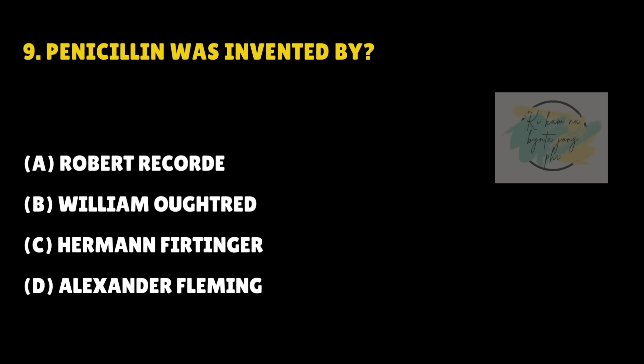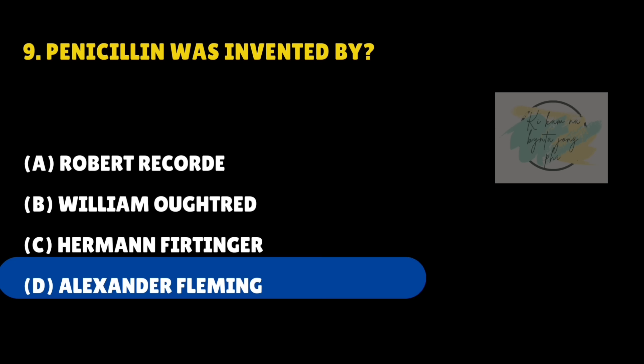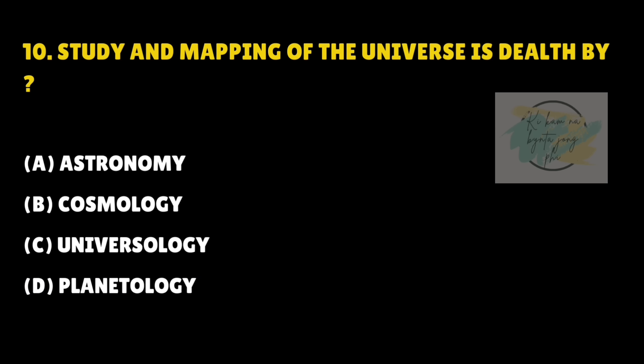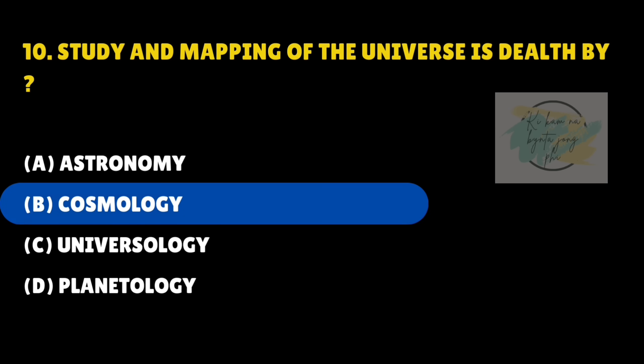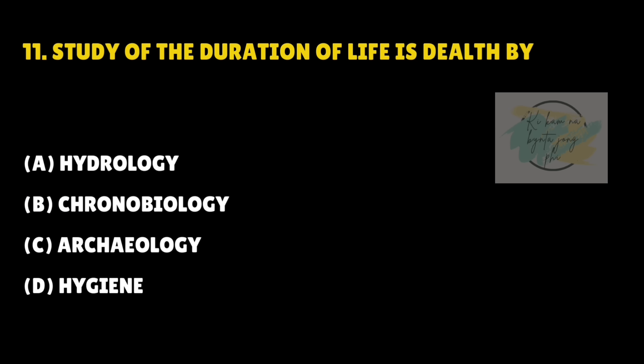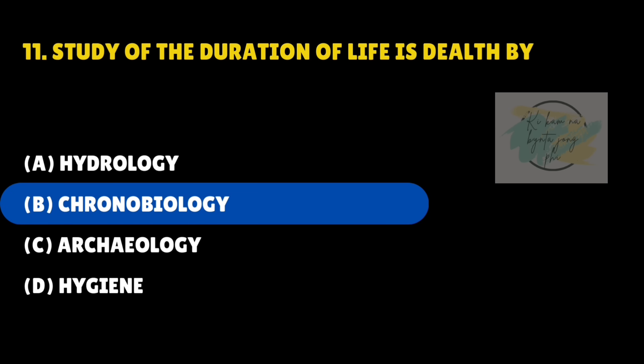Penicillin was invented by — answer is D — Alexander Fleming. Study and mapping of the universe is dealt by — answer is B — Cosmology. Study of the duration of life is dealt by — answer is B — Chronobiology.